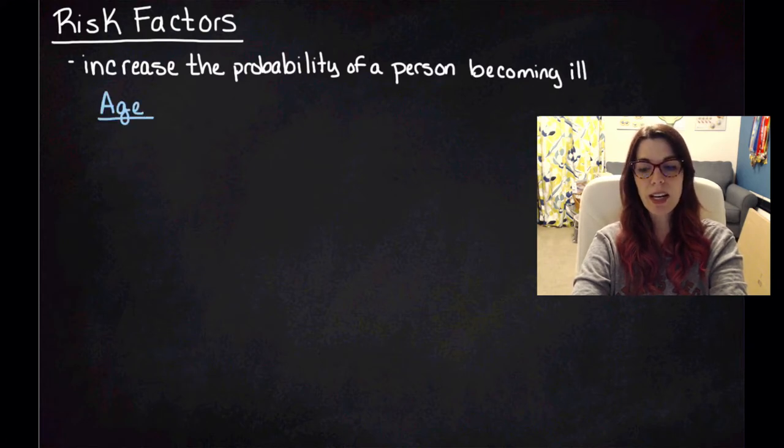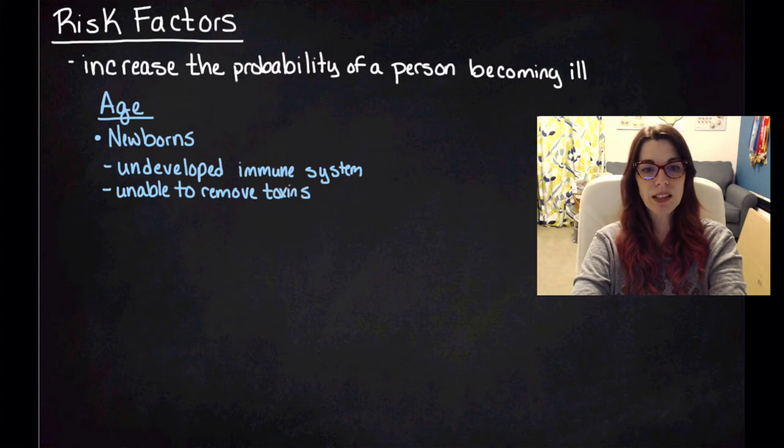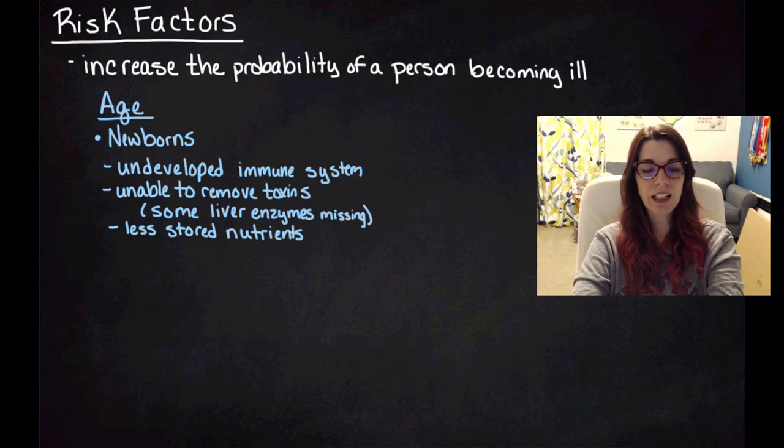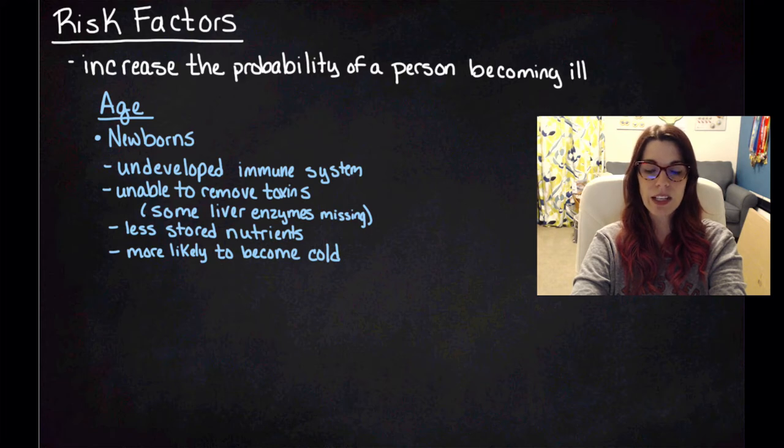The first one is age. There are two main categories. First is newborn babies. Newborns are more susceptible to disease because they have an undeveloped immune system and they're unable to remove toxins from the body, primarily because some of their liver enzymes are missing immediately after birth. They also have less stored nutrients, so they can't meet the energy demands of combating an illness as readily. And then they're more likely to become cold, partially because they have reduced fat stores and partially because they have a higher surface area to volume ratio.